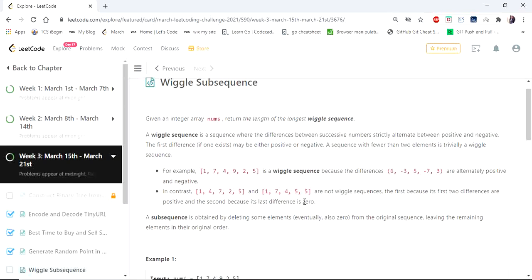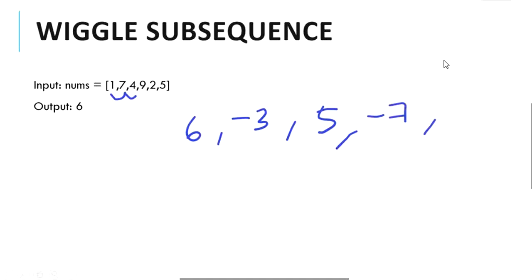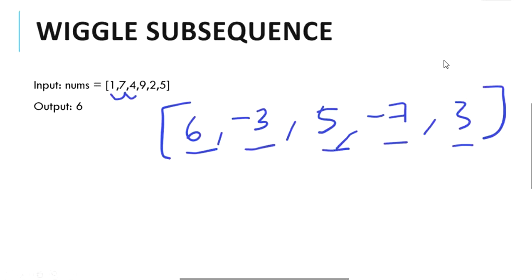Let's understand this problem statement with an example. We start iterating and finding the difference of the variables. The first difference between 7 and 1 is 6, the difference between 4 and 7 is minus 3, 9 minus 4 is 5, 2 minus 9 is minus 7, and 5 minus 2 is 3. The difference between each element is changing from positive to negative, strictly alternating, so this is a complete wiggle subsequence and the length is 6 — that is our output.